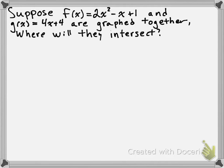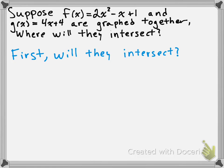Last year you talked about linear systems, which are when you're considering two lines at the same time. The solution to a linear system is the point of intersection. The solution to a linear quadratic system is also going to be any points of intersection. So the question is where will they intersect — but first we should ask ourselves: will they intersect at all? Maybe it's possible that these two functions won't intersect at all.